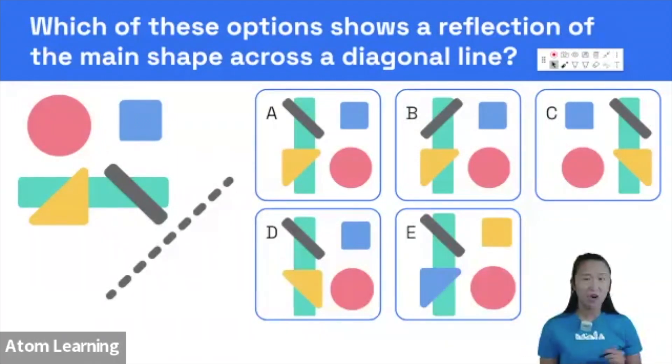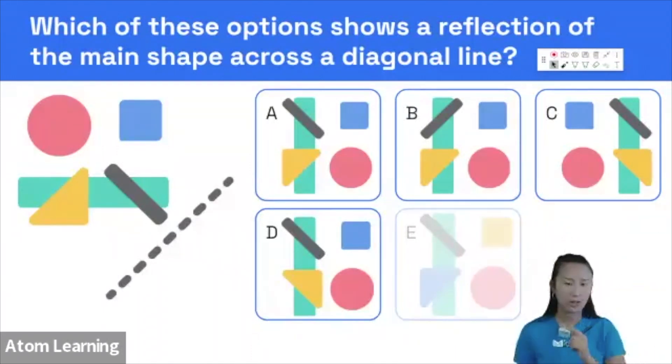If we have a quick look, can we spot any obviously wrong answers? Well, yes we can. In E, the triangle and the square are in the wrong colors. So you can immediately rule it out. The colors should be swapped. So E, not our answer.